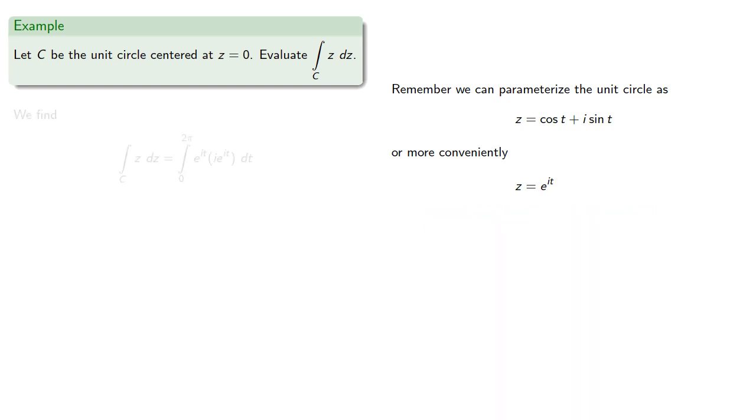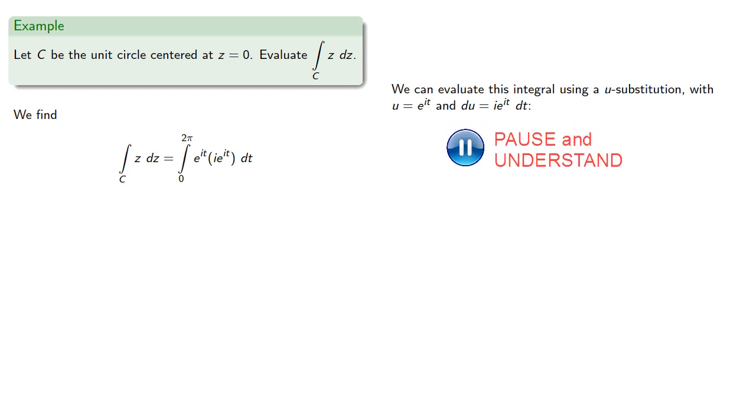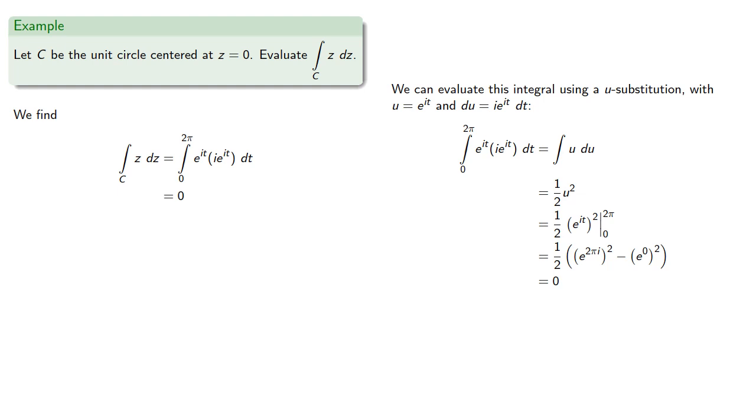And so our integral will become... And we can evaluate this integral using a u substitution with u equal e to the i t and du equal i e to the i t dt. And if we do that, we find... Which is consistent with our expectations.